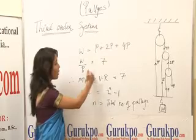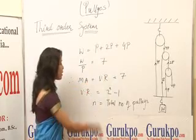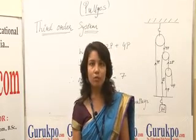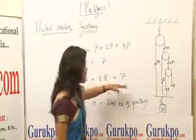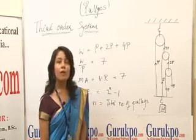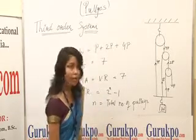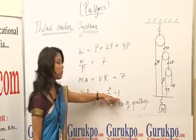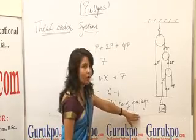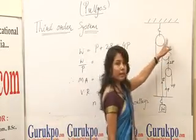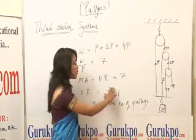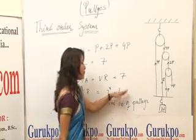The mechanical advantage, which is W divided by P, equals 7. In the ideal condition, the velocity ratio equals the mechanical advantage, so the velocity ratio is also 7. In general, the formula for velocity ratio in a third order system is 2^N minus 1, where N is the total number of pulleys. With N equals 3, we get 2 raised to the power 3 equals 8, and 8 minus 1 equals 7, confirming our result.